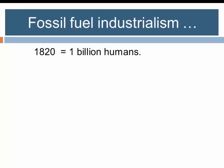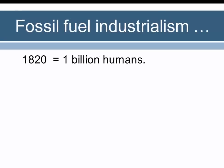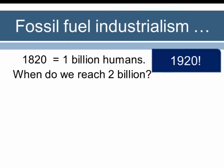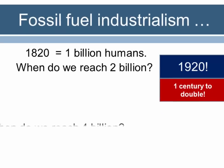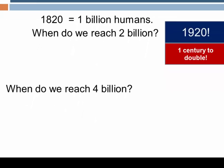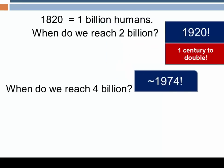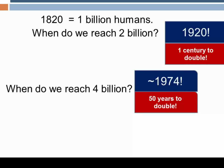If that rate of growth had continued, we'd still have less than 2 billion people today. But coincident with the development of fossil fuel industrialism, we've seen a tremendous acceleration. We reached 1 billion around 1820, 2 billion by 1920 — so about a century to double — and then 4 billion around the mid-1970s, roughly half a century after we reached 2 billion.